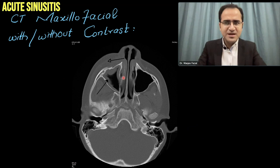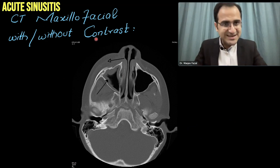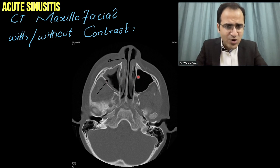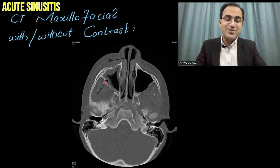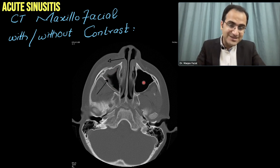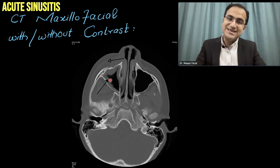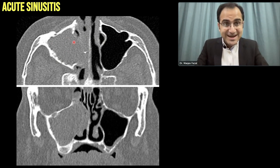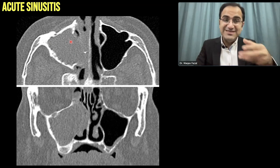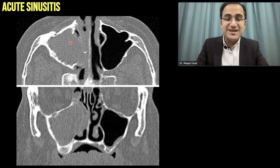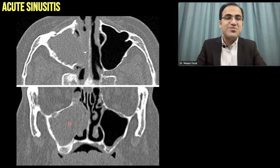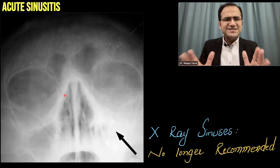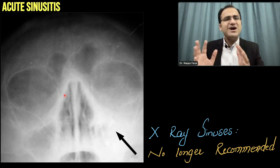CT of the maxillofacial region with or without contrast is the preferred imaging. On CT, you can clearly see normal maxillary sinuses filled with air versus inflamed sinuses with inflamed mucosa. In another image, one side appears clear and black (air-filled) while the other is plugged with secretions and inflammation — easily differentiating normal from abnormal.